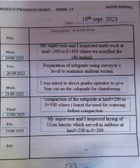On Monday, the nature of work done: my supervisor and I inspected earthwork at km 0+200 to km 0+400, where we scarified the old asphalt. This is actually telling the lecturer that you have worked at a certain location. You can either use km or chainage — they are all the same thing.